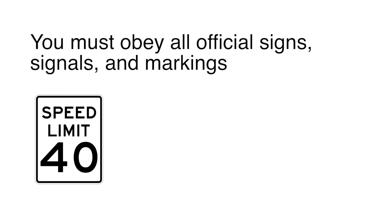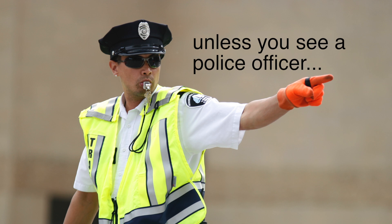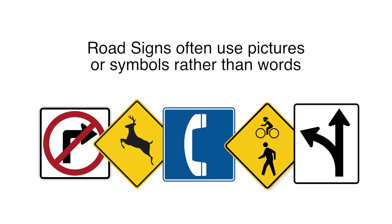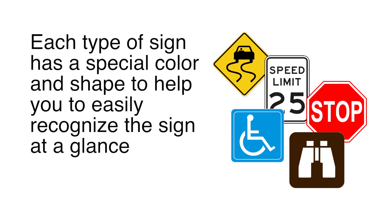Section 1: Signs and Traffic Signals. You must obey all official signs, signals, and markings unless you see a police officer or road worker redirecting traffic. Signs often use symbols or pictures rather than words. Each type of sign has a special color and shape to help you easily recognize the sign at a glance.